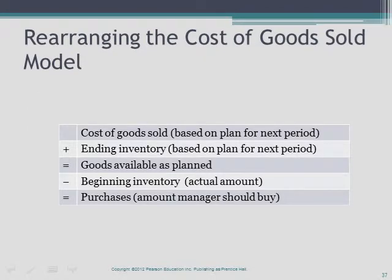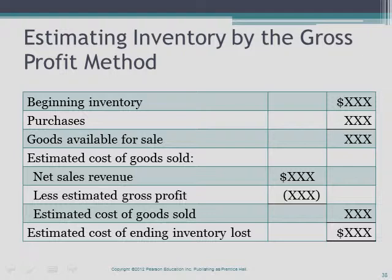Often a business must estimate the value of its goods. A fire may destroy the warehouse, all inventory, and all records, requiring the insurance company to estimate the loss. In this case, the business must estimate the cost of ending inventory because the records have been destroyed. The gross profit method, also known as the gross margin method, is widely used to estimate ending inventory. This method uses the familiar cost of goods sold model, rearranging ending inventory and cost of goods sold to compute the estimate.